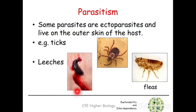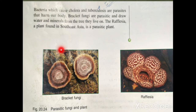Other examples of parasites include leeches, which suck blood, and ticks — as we saw on the rhinoceros. Bracket fungi are also parasitic; they draw water and minerals from the tree they live on, benefiting themselves while harming the tree.